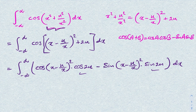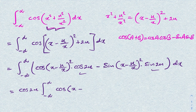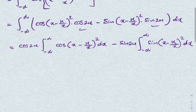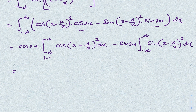Since cosine(2n) and sine(2n) are constants, we can take them outside the integrals. We write: cosine(2n) times the integral from minus infinity to infinity of cosine[(x − n/x)²] dx, minus sine(2n) times the integral from minus infinity to infinity of sine[(x − n/x)²] dx.